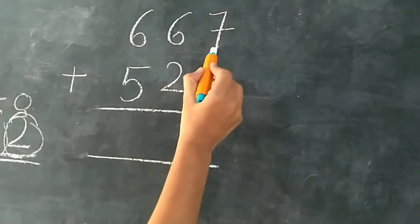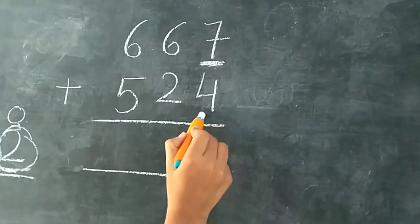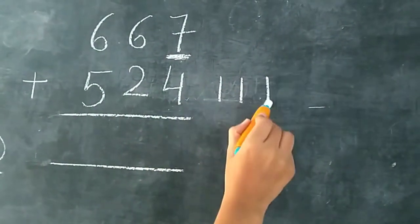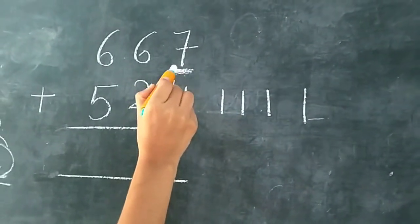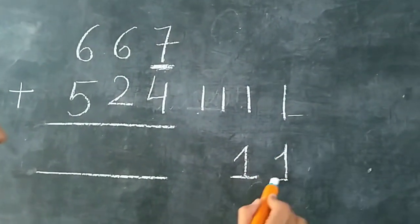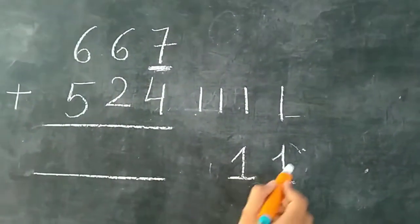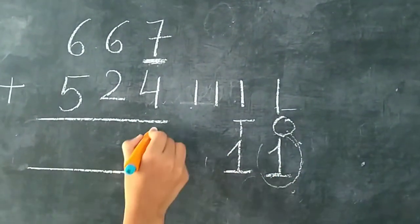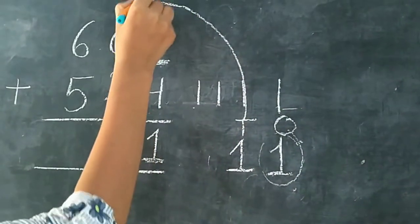Now next. 7 is already right here. Ab isme hum 4 aur add karenge. Sabse pehle yahan 4 lines draw karenge: 1, 2, 3, 4. Now we have to count after 7: 8, 9, 10, 11. Phir se 2 digits hain — hum 2 digits yahan nahi likh sakte ek saath. So we write 1s digit here, and 10s is our carry. We write here 1, and 1 is our carry.